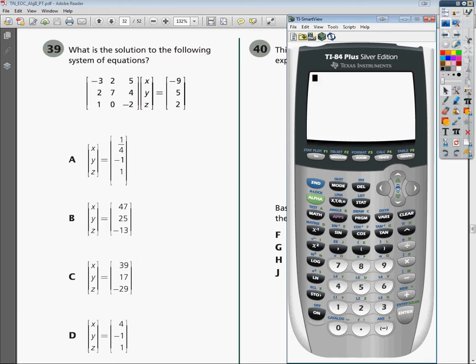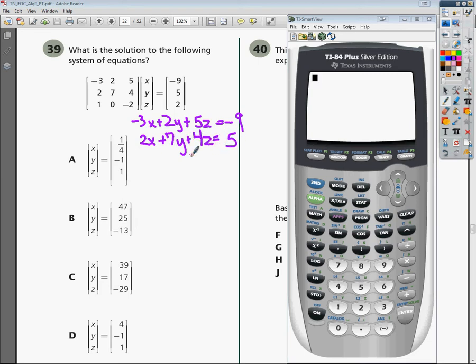It gives you it in the matrix form. The way they would really write it out is you'd end up with -3x + 2y + 5z = -9, and then you'd have 2x + 7y + 4z = 5, and then you'd end up with 1x, then there'd be no y here because it's 0y, minus 2z = 2.